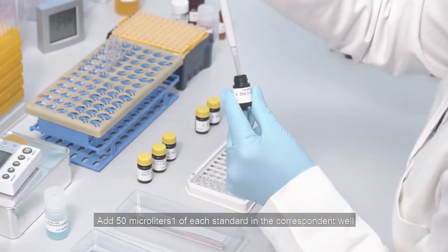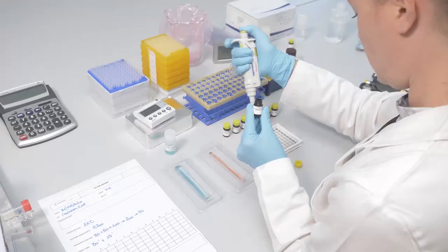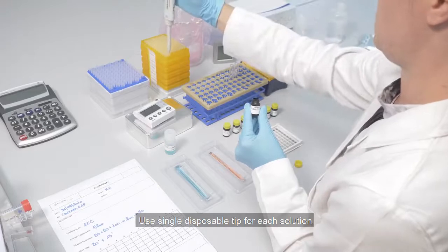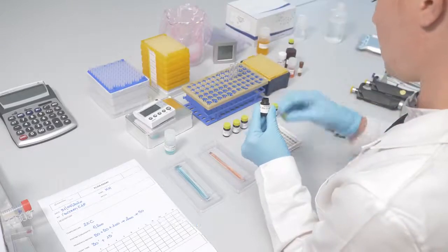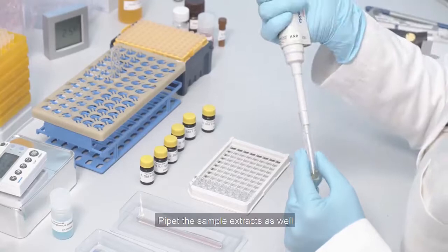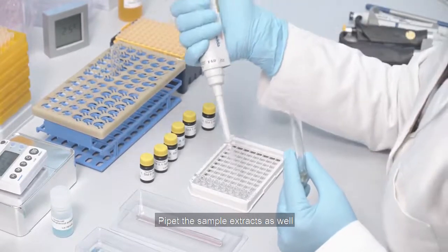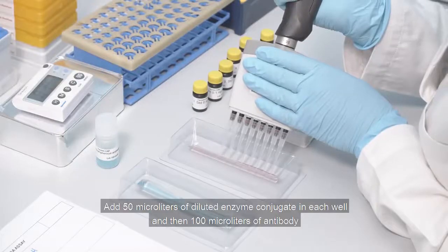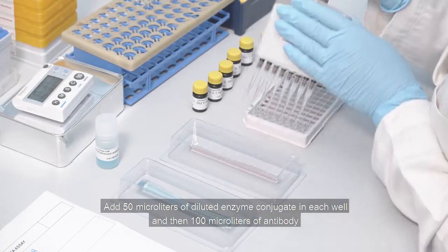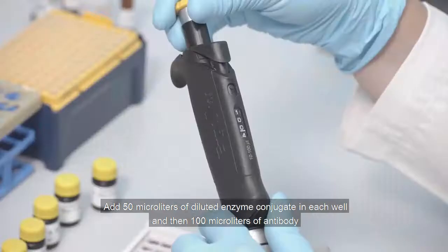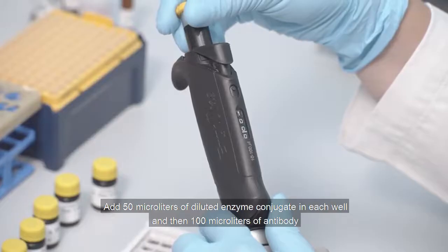Use a single disposable tip for each solution. Pipette the sample extracts as well. Add 50 microliters of diluted enzyme conjugate in each well, and then 100 microliters of antibody.